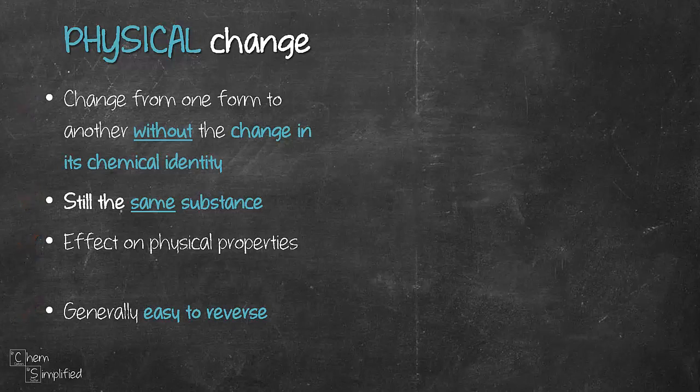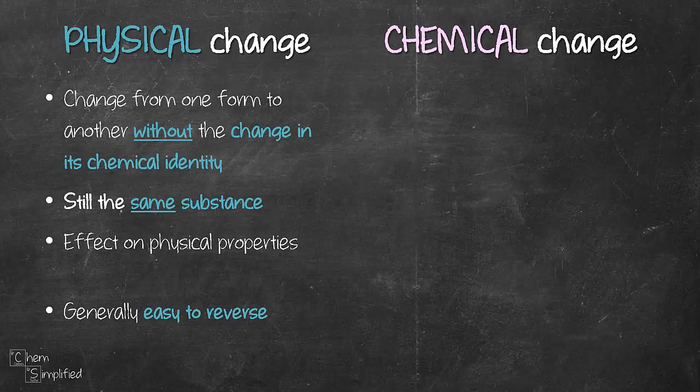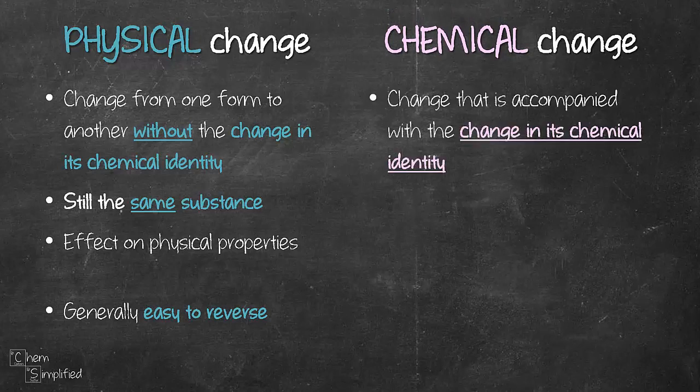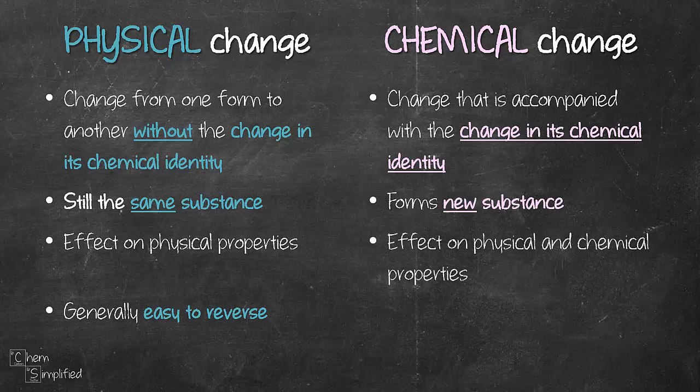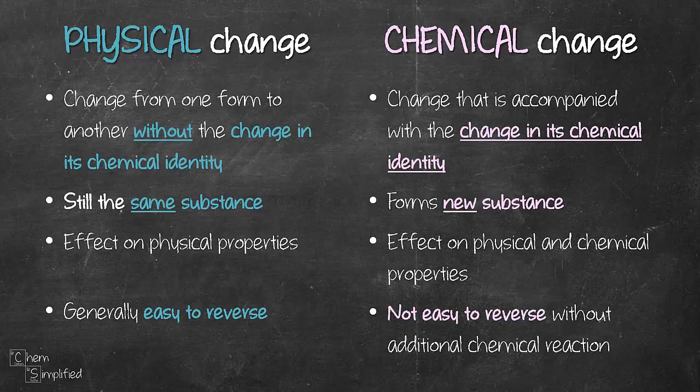Now we move on to chemical change. Chemical change is a little bit different from physical change. It's a change that's accompanied by a change in its chemical identity. Meaning before and after the change, it is not the same substance. It forms new substance. And the effect that we see is going to be on both physical and chemical properties. And usually it's very difficult to reverse the change.